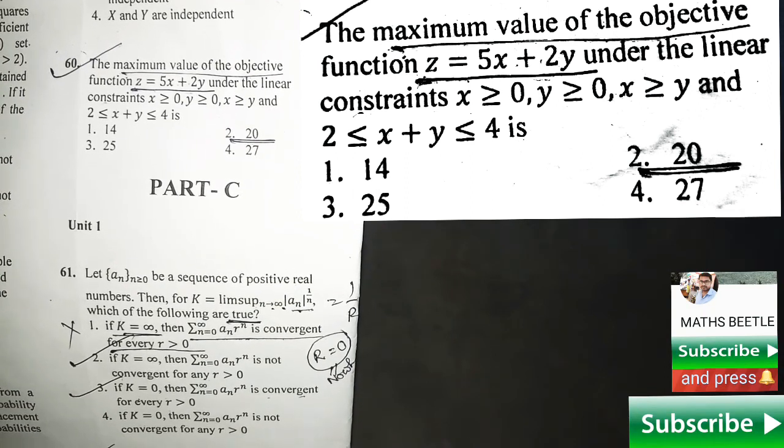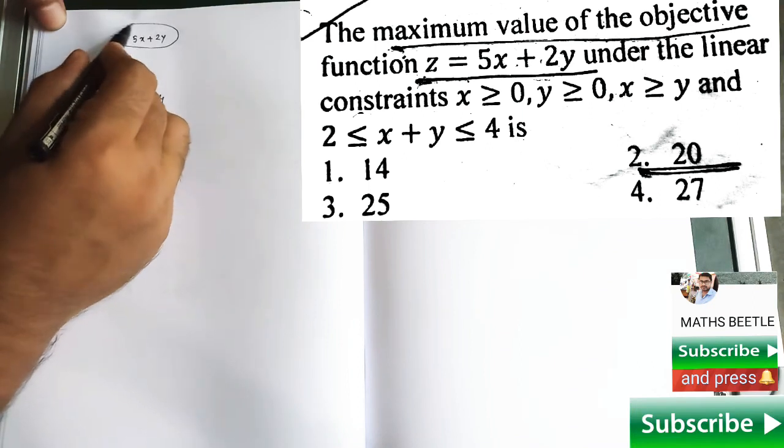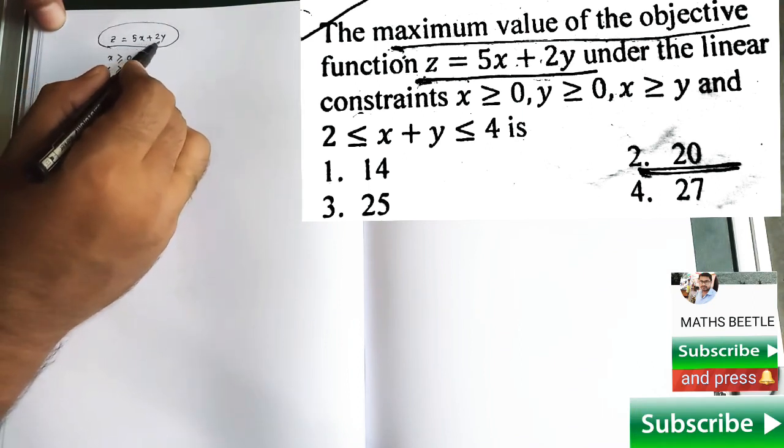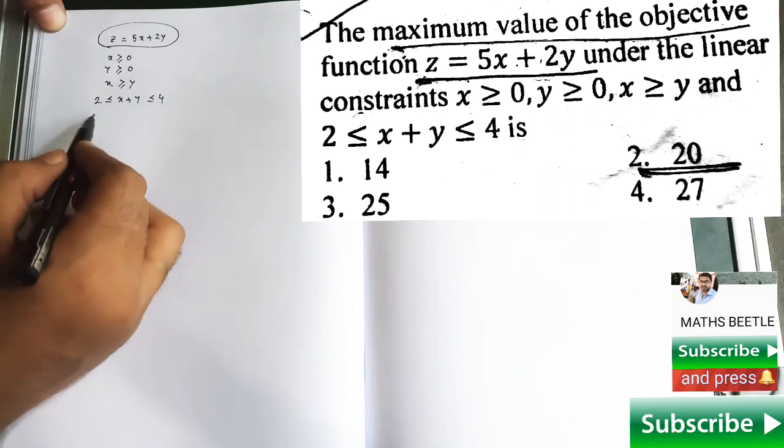So let's try to solve this. This is the given function z equals 5x plus 2y and these are the given constraints.